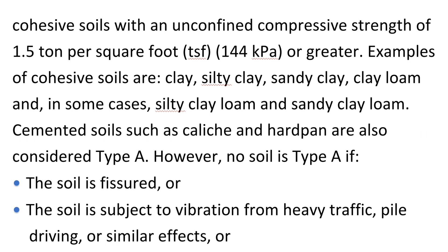Examples of cohesive soils are clay, silty clay, sandy clay, clay loam, and in some cases silty clay loam and sandy clay loam. Cemented soils such as caliche and hardpan are also considered Type A.